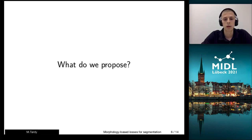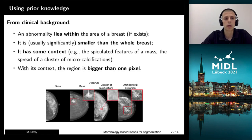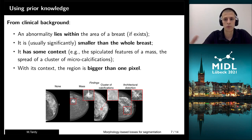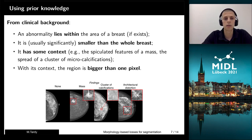So, to deal with that, what we propose is to use some prior knowledge and use the clinical background. We know that obviously the abnormality is somewhere within the area of the breast, if it exists. And usually, it's significantly smaller than the whole breast.